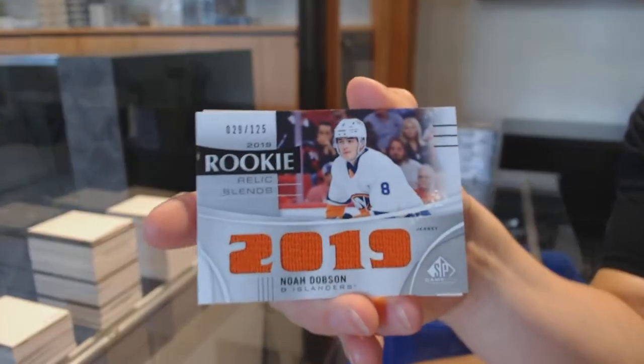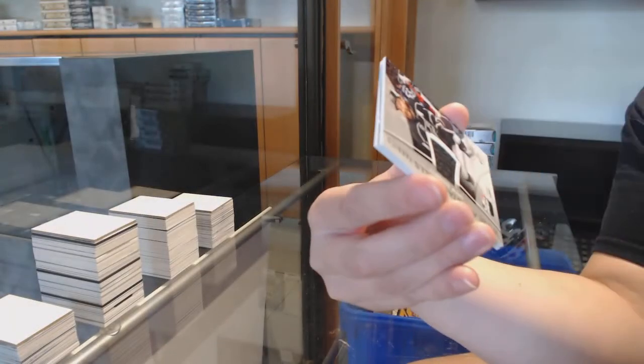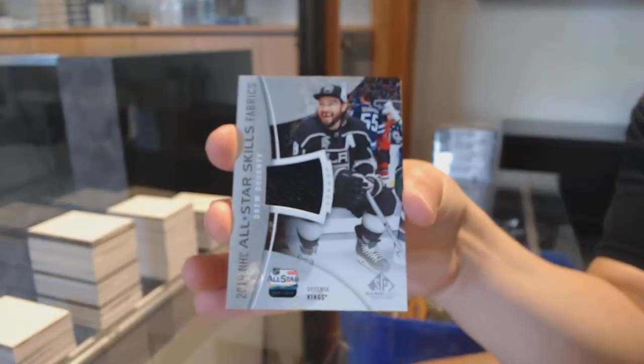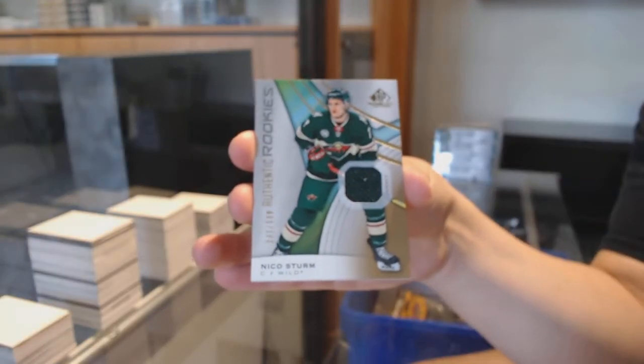Number to 125 rookie relic blends for the Islanders, Noah Dobson. All-star jersey for LA, Drew Doughty. And Nico Sturm, rookie jersey for the Minnesota Wild.